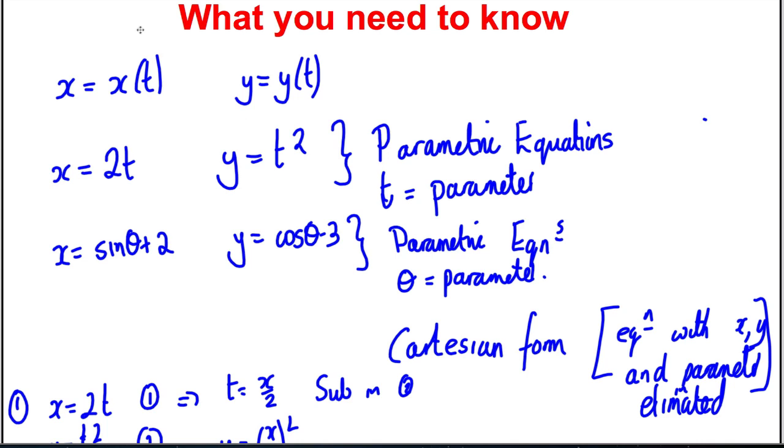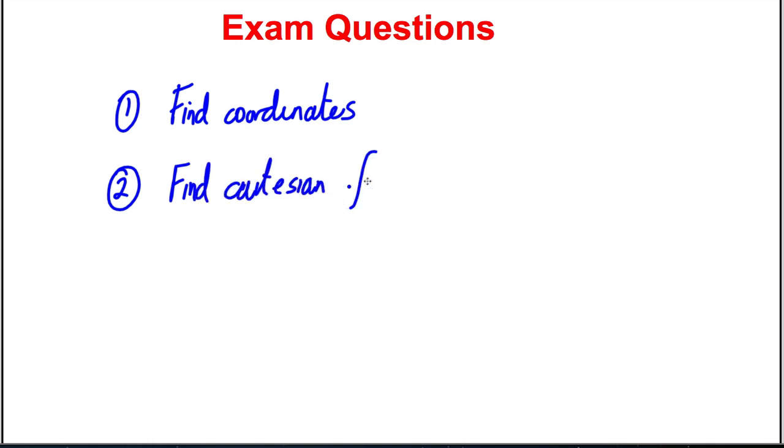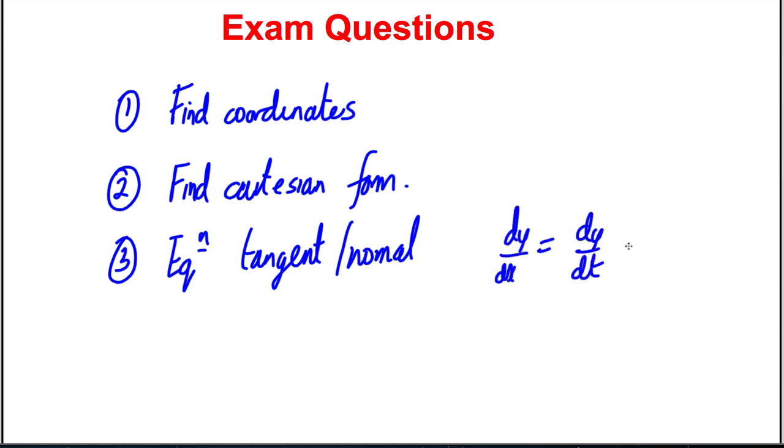Okay, so that's pretty much it. So going on to exam style questions, usually they might ask you to find coordinates when t or theta is something. They might also ask you to find the Cartesian form. That's a common question. They usually ask you something about finding the equation of the tangent or normal. And these are the questions where you use dy dx equals dy dt divided by dx dt and use coordinates, etc. And lastly, what they can ask you is integration questions. But we're going to do those in another video, so don't worry about this for this video.